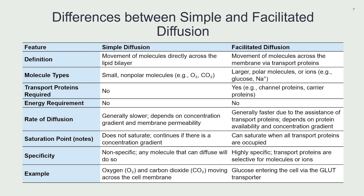There is a problem when you are using transporters: the number of transporters on a membrane is not infinite, and they can work at a certain speed only. Once the transporters are in use, the rest of the substances have to wait. It's like when you arrive from abroad and go through immigration. If you are lucky and there is no one, you enter rapidly. But if many airplanes arrive at the same time, there may be hundreds of people waiting, a limited number of agents, and they take their time — it doesn't matter that you are in a rush, you have to wait. That is what we call saturation of the transporters.